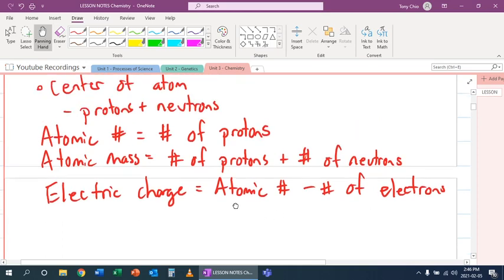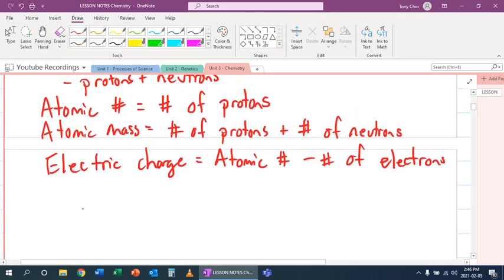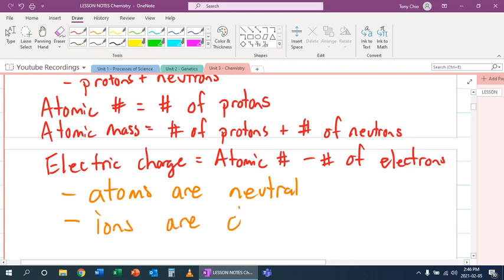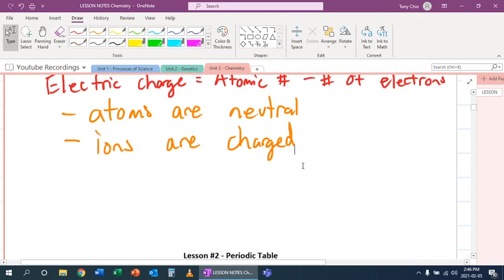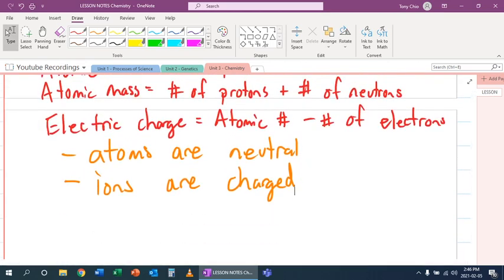Now what we need to know is that in atoms, in atoms, they are neutral. Atoms are neutral. Which means that the number of protons and the number of electrons are equal. But then when they're not equal, we call those ions. Ions are charged. As always, make sure you keep yourself safe and healthy. And I'll see you soon.